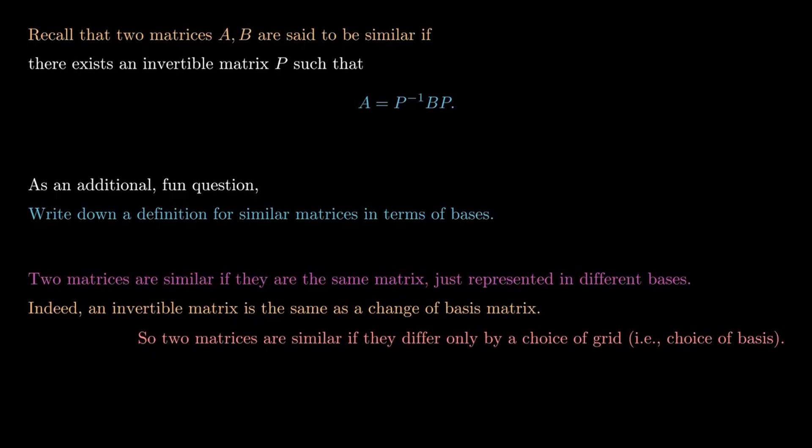When we write the linear map down with respect to this grid, that's what a matrix is. An invertible matrix is when you just change the grid. And two matrices are similar if they are the same matrix, as long as you can get from one to the other by just changing the grid.